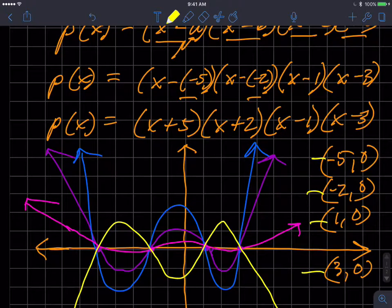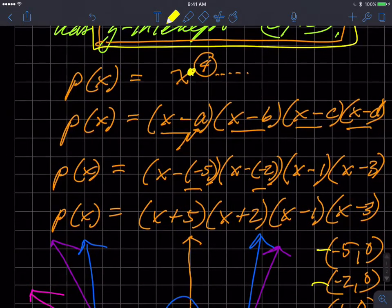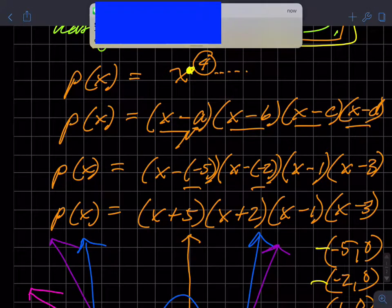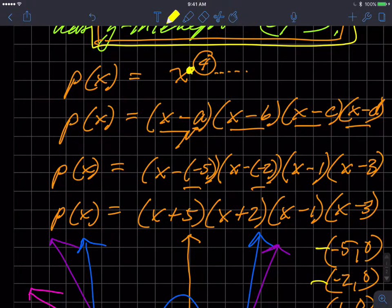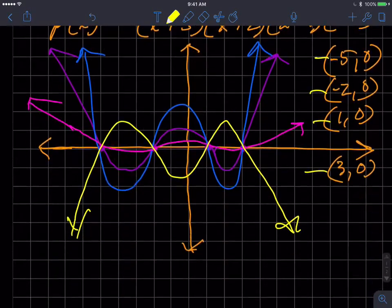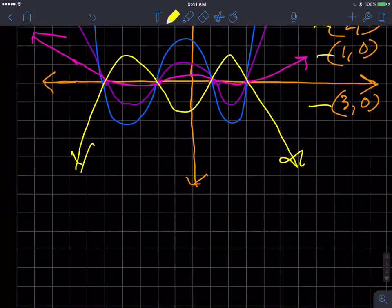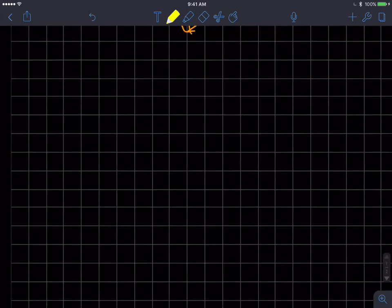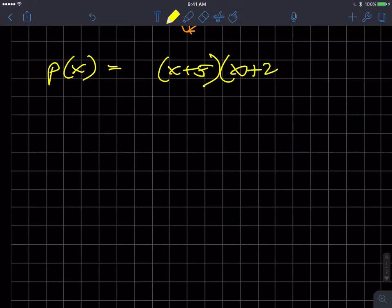So the function actually goes all the way up there. And we need to figure out how do we incorporate or how do we identify specifically the values that would generate that function that goes through that point. So we're going to take a look at this in this manner. So we'll go back to my original function with those roots laid out. x plus 5, x plus 2, x minus 1, and x minus 3.